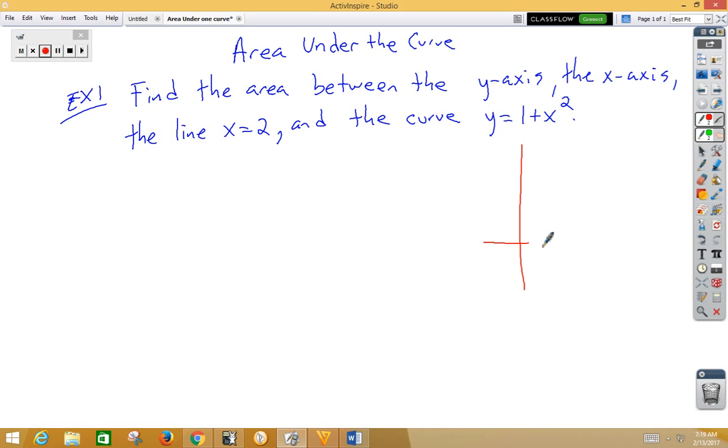If we think about what the graph is going to look like, first of all, the line x equals 2 would be this vertical line. And then the curve y equals 1 plus x squared is a parabola, but we only want the part that's between the y and the x-axis. So we're talking about quadrant 1, and we're looking at finding this area right here.